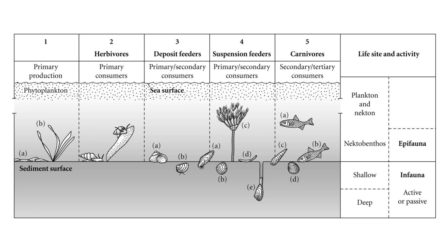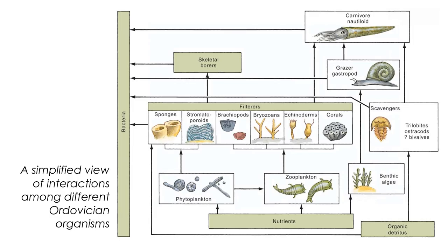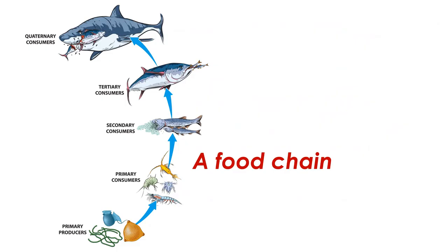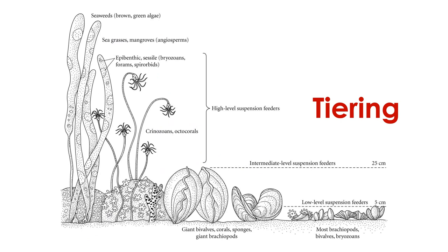There is incredible diversity in where and how organisms live in the ocean today and beyond. This variation contributes to the development of complex interactions among organisms living in communities. Some of the most basic interactions are food chains and food webs. We also find that these interactions contribute to the tiering of communities, so that epifaunal organisms are staggered at various heights above the seafloor and aren't all competing for the exact same limited resources.